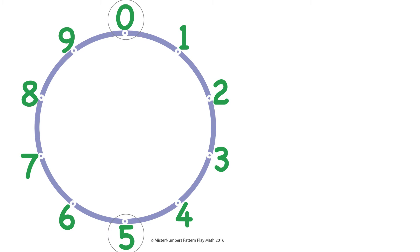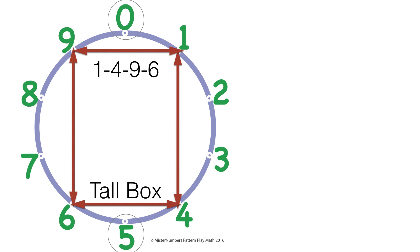Next, we're going to make some boxes in the circle because it's helpful to know where the numbers are on the wheel. And we'll make a beautiful design. Look at the numbers next to 0 and 5. 1, 4, 6 and 9. Make a box with those. I call it the tall box.